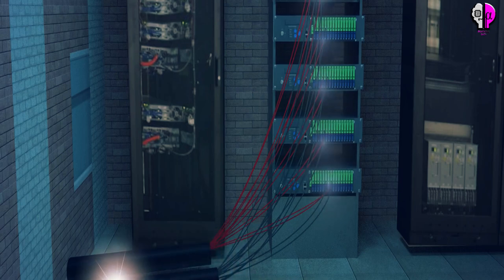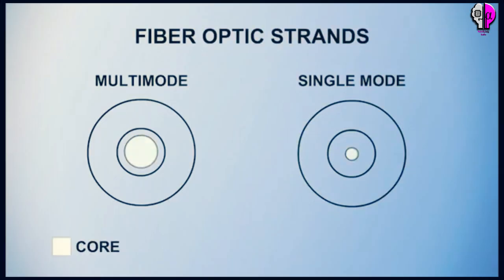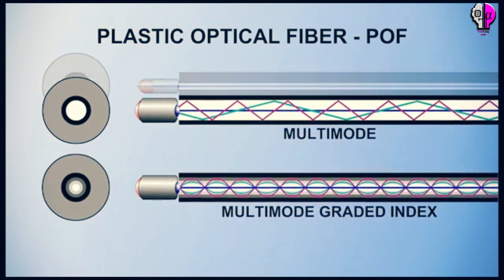There are basically three types of fiber optic cables commonly used. They are single mode, multi-mode and plastic optical fiber.